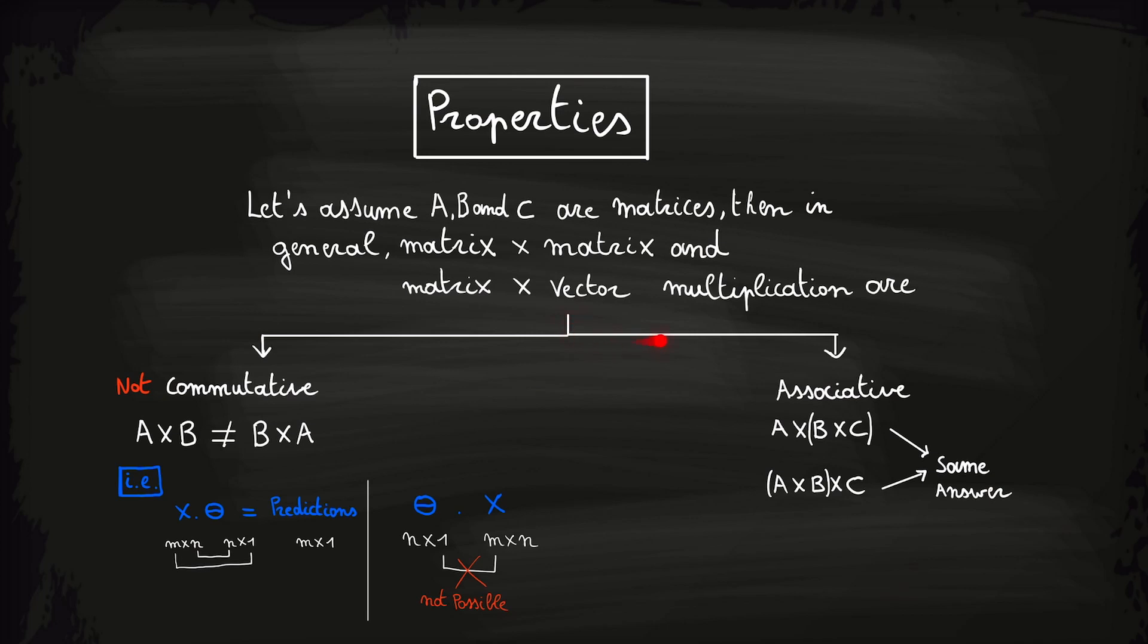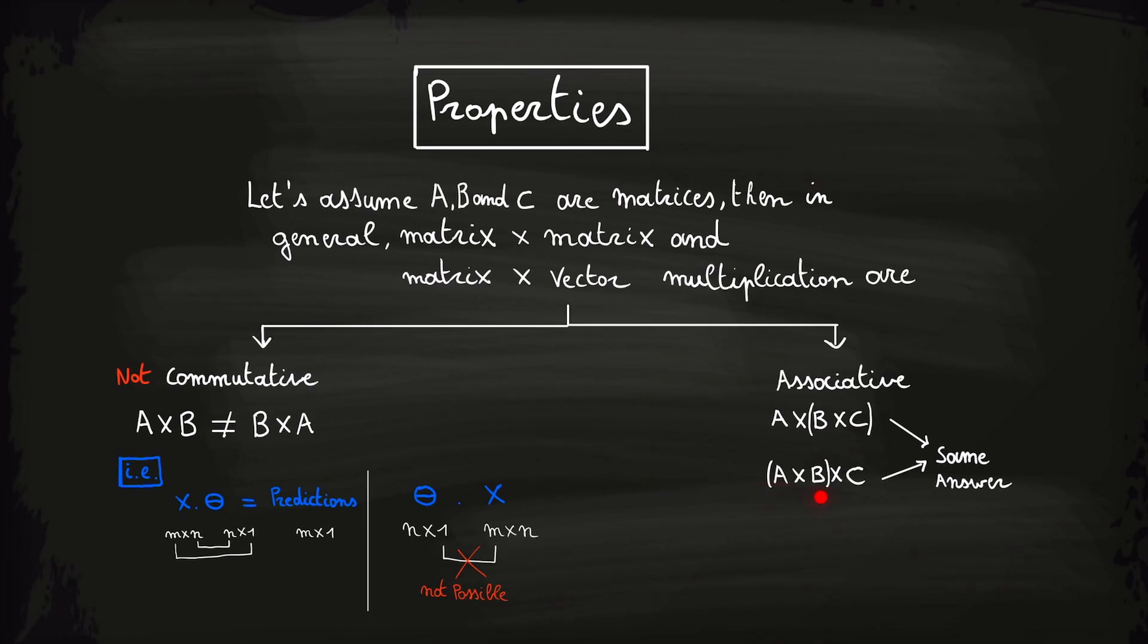However, on the other hand they are associative, meaning the grouping of matrices in multiplication does not affect the result. So you can first calculate matrix B times matrix C and then calculate the result of matrix A times this matrix, or you can start with calculating matrix A times matrix B. Either way, you will get the same result.